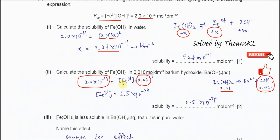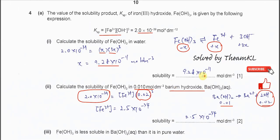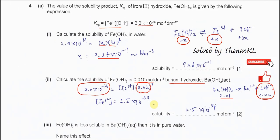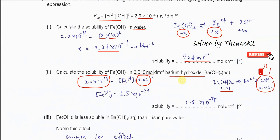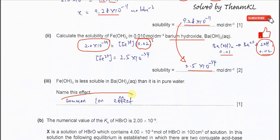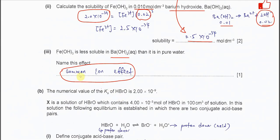Calculate the iron 3 concentration in the presence of barium hydroxide. Comparing the two concentrations: the solubility of iron 3 hydroxide in water is much higher, but in barium hydroxide solution its solubility decreases a lot — from the water value down to this lower value. This is due to the common ion effect, so iron 3 hydroxide is less soluble in barium hydroxide because of the common ion effect.